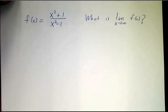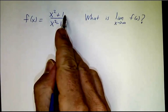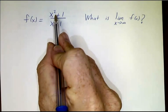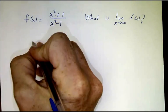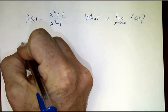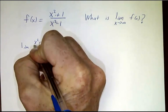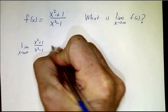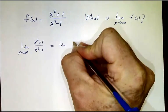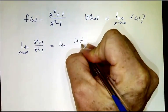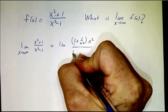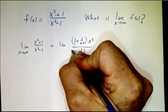So, for example, if you have the function x squared plus 1 over x squared minus 1, that's getting big as x goes to infinity and so is that. So, we say the limit of x squared plus 1 over x squared minus 1 is the limit of 1 plus 1 over x squared times x squared over 1 minus 1 over x squared times x squared.